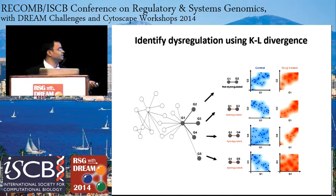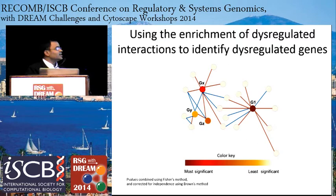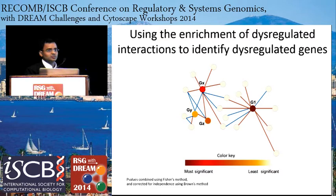Once we identify all the interactions which are dysregulated, we assign a final p-value for each gene depending on whether they are enriched with dysregulated interactions or not. To assign significance for this enrichment, we integrate all p-values using Fischer's method. However, Fischer's method assumes all evidences or interactions are independent, but in reality they are not because they are connected to a central hub. So we correct for this using Brown's method, which accounts for the dependency between interactions.